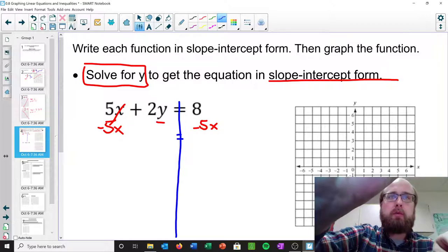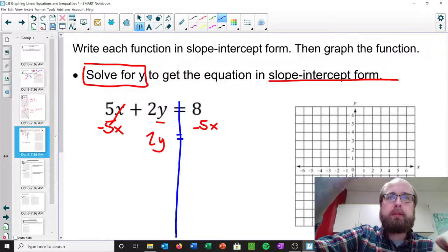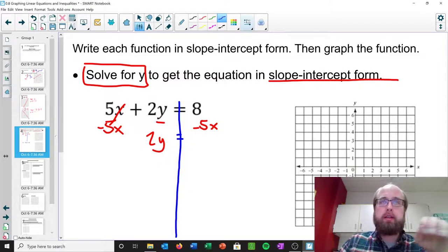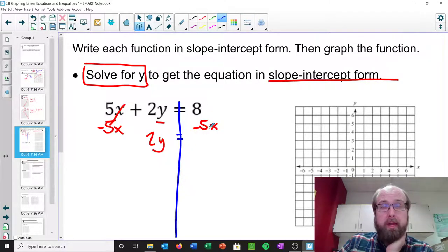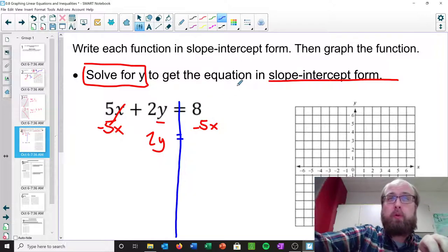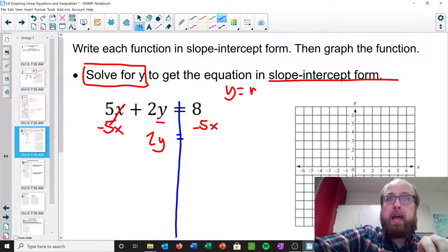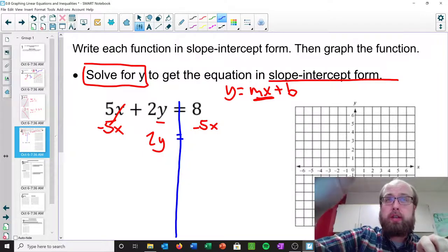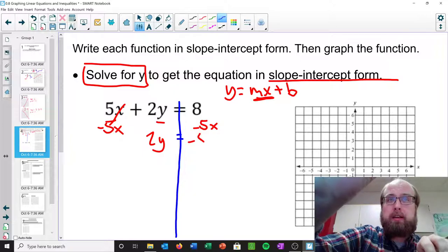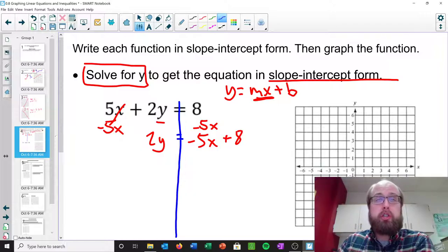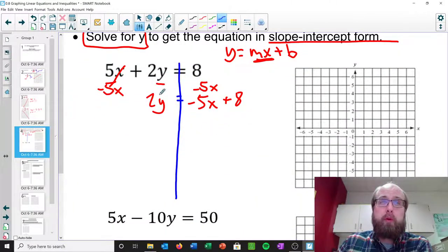Just like that. And then what are we going to be left with? Well, on the left-hand side, we're just left with 2y. And on the right-hand side, we have 8 minus 5x. Now, you could write it like that if you want. But because slope-intercept form is y equals mx plus b, right, we normally write it where the x is first. I'm going to write this as negative 5x plus 8. I prefer to just put it in that order right away. And so we have 2y equals negative 5x plus 8.